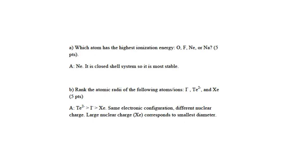For the second question, atomic radii: iodide, telluride, and xenon. Those three have the same electronic configuration, the same number of electrons, but different number of nuclear charges. So the largest nuclear charge will produce the smallest diameter. The sequence would be telluride greater than iodide greater than xenon.